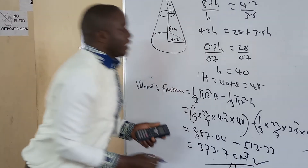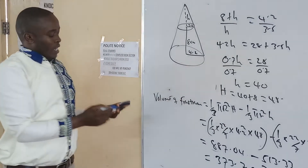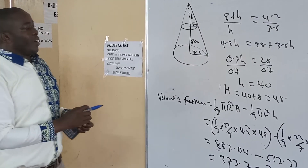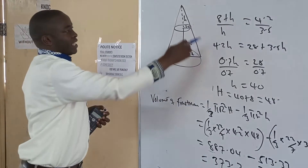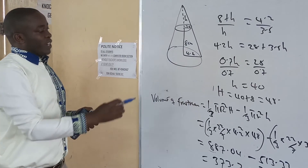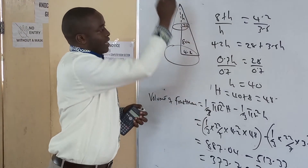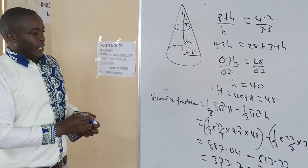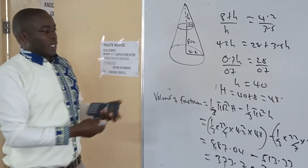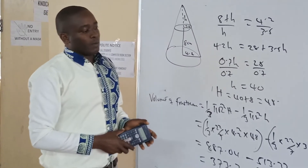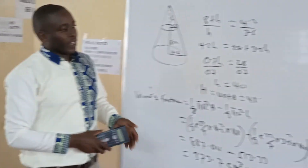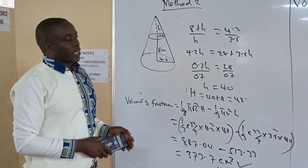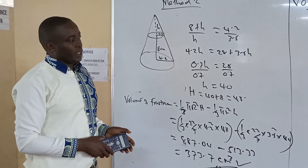So you realize you get the same answer, but Method 2 is longer because you have to use similarity to find the extended height and then apply the cone formula. So it's better to use the simpler direct method. Thank you for listening and subscribe for more updates. Thank you.